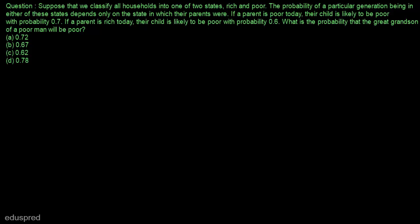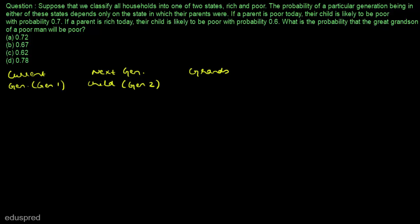To solve this question, I am making five columns here. In the first column, I am recording the current generation — generation number 1. In the second column, I am recording the next generation child — generation number 2. In the third column, I am recording grandson — generation number 3. In the fourth column, I am recording great grandson — generation number 4. And in the fifth column, I am recording probabilities.